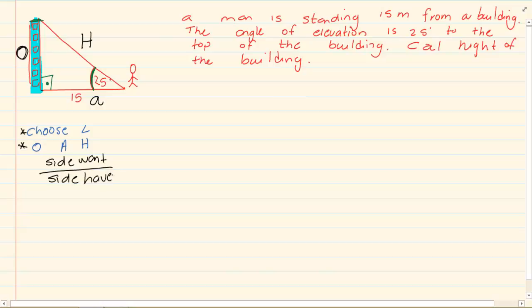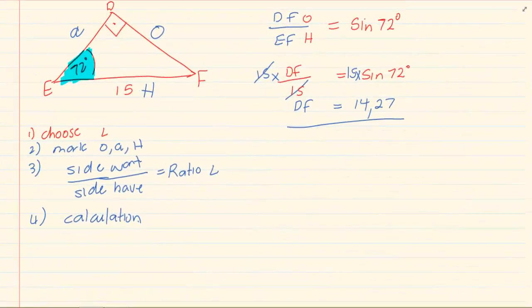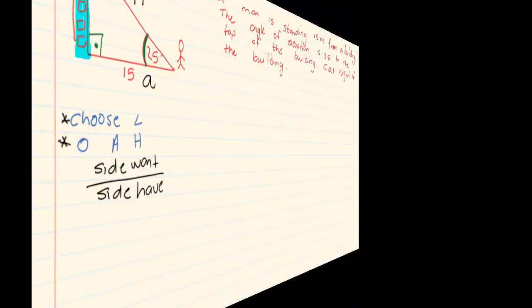All this has been previously done in our triangles. If you are not familiar with it, go back to this video before attempting 2D triangles. You'll see it says choose your angle, mark your O, A and H, side you want over side you have equal to the ratio. If you are not familiar with this, go back to that video and learn it before attempting 2D triangles.